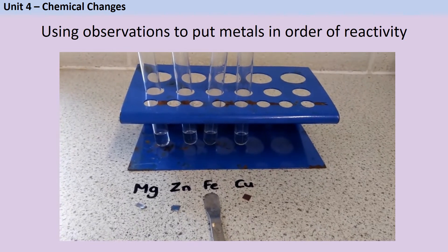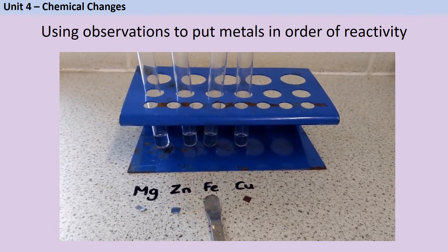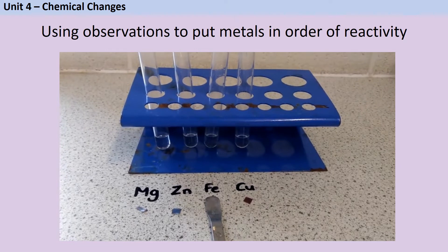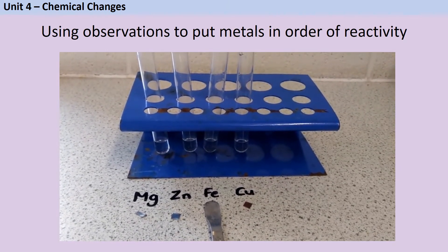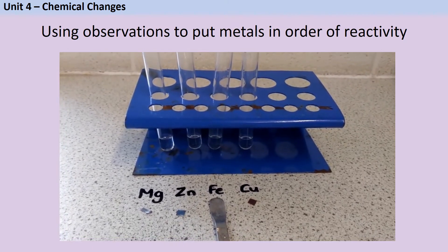We can use our observations of the reactions of metals with acids to put them in an order of reactivity. Here I have four test tubes, all containing the same volume of the same concentration of a hydrochloric acid. For three of my metals, I have a piece of ribbon that's about the same size.